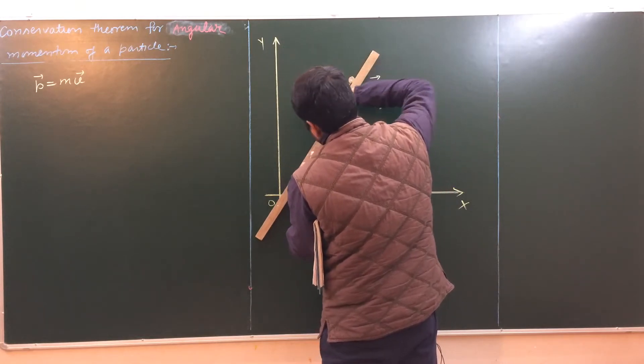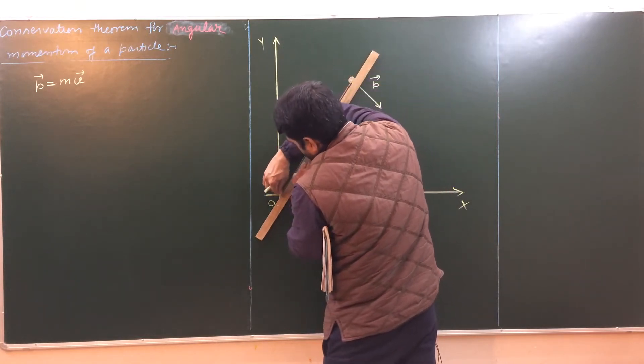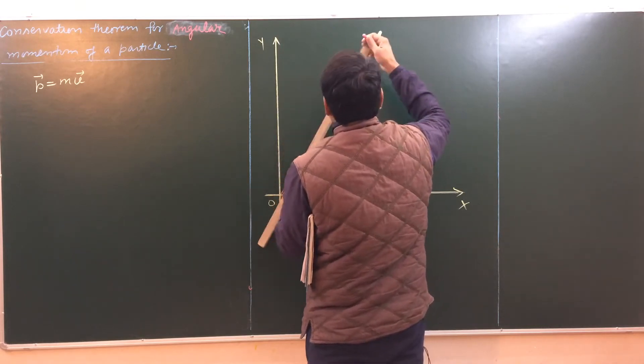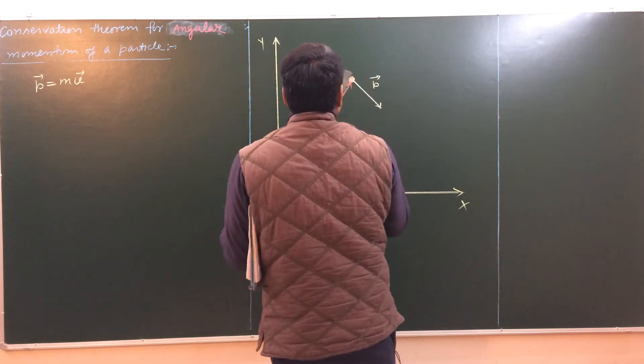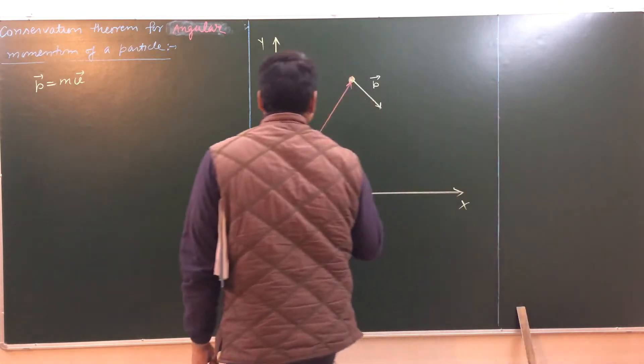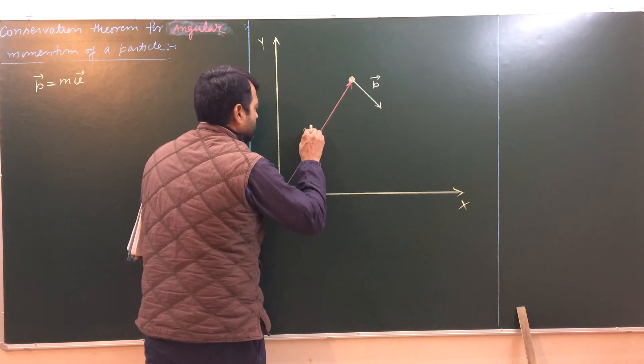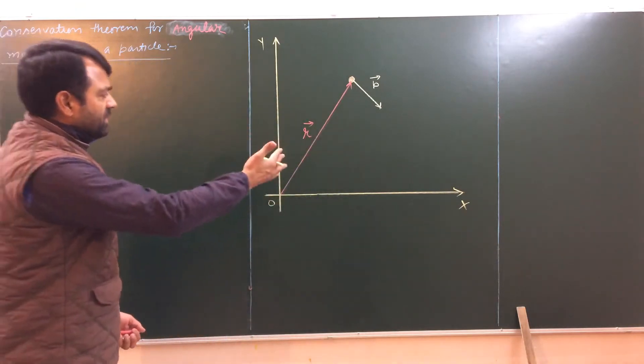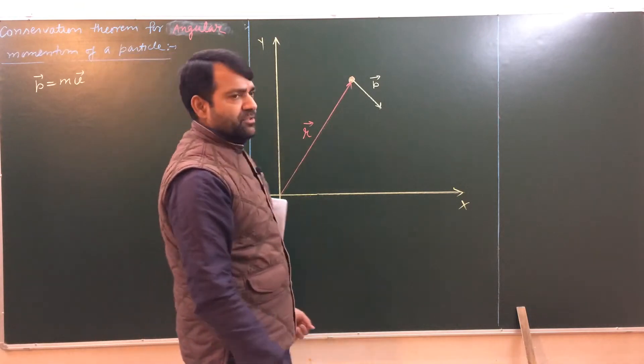It is not necessary that we have to select o here. You can select your own coordinate system. This is the position vector r. As the particle is moving, so we can say this r is a function of time.